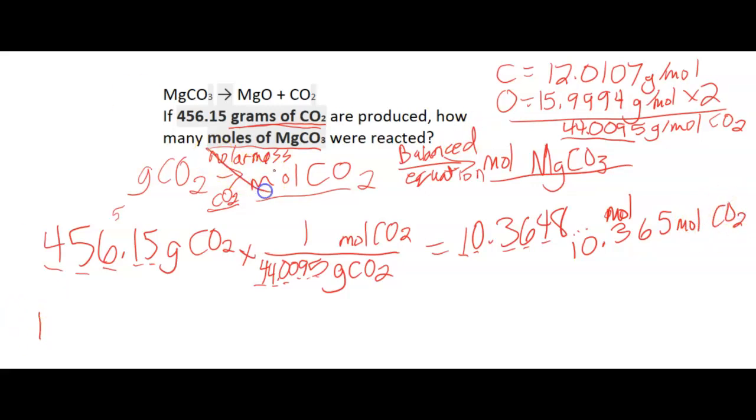So that gets rid of my first step here. So I have my 10.365 moles of CO2. I want to get from moles of CO2 to moles of MgCO3. So moles of MgCO3, moles of CO2. I need to find this ratio for my balanced equation.